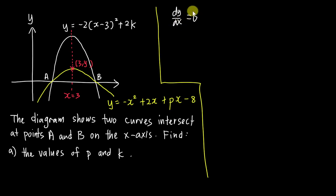Because dy/dx equals 0 is how we actually get the turning point. So if I do dy/dx equals 0, this one I will get about negative 2x plus 2 plus p equals 0, which is I differentiate this equation.